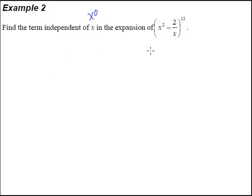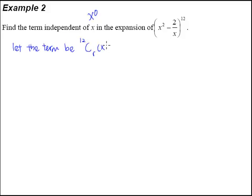So how are we going to find the specific term with x to the power of 0? Of course we've got to use the general term formula. The first step will be to let the term that we're interested in be the general term. So the general term will be 12Cr, then x squared with a power of 12 minus r, and the second term, negative 2 over x, raised to the power of r. This is the general term in this binomial expansion — every single term inside this expansion should look like this.